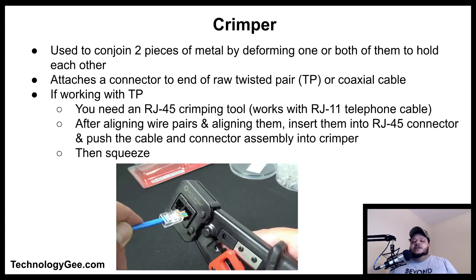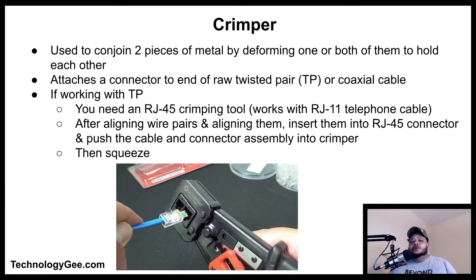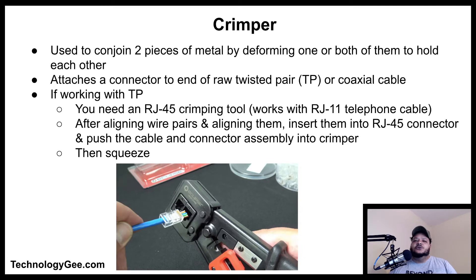Another tool that you're going to need is called a crimper. A crimping tool is a device used to conjoin two pieces of metal by deforming one or both of them to hold to each other. The result of the tool's work is called a crimp. A crimper attaches a connector to the end of a raw twisted pair or coaxial cable.